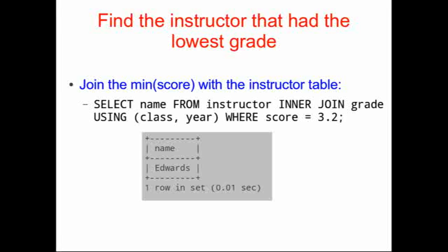Of course, if two professors had scored their classes with 3.2, we would have two professors returned. However, next semester or next year that lowest score may change. We may have to rewrite our query to adapt to the new lowest score. So it would be really nice if, instead of having to write down that 3.2 each time, we could just make one select statement that said tell me the lowest score and then find the person that has that lowest score.